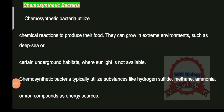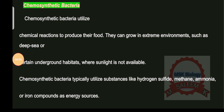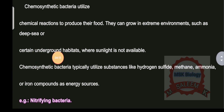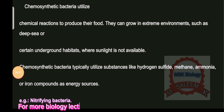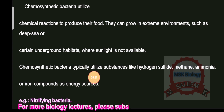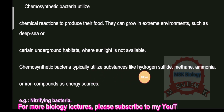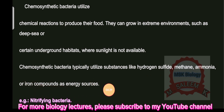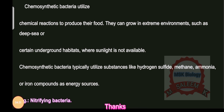Chemosynthetic bacteria utilize chemical reactions to produce their food. They can grow in extreme, unfavorable environments such as deep sea or certain underground habitats where sunlight is not available. Chemosynthetic bacteria typically utilize substances like hydrogen sulfide, methane, ammonia, and iron compounds as energy sources.